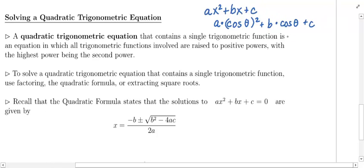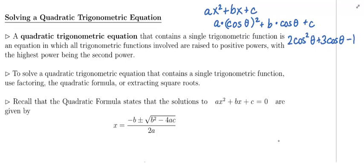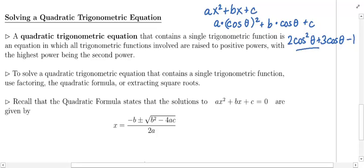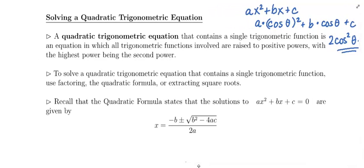It's going to look something like this: say a is 2, so 2cos²θ + 3cosθ − 1. We have the same trigonometric function throughout — only cosine of theta. Here cosine of theta is raised to the second power, and here it's raised to the first power. The highest power is the second power, fitting the mold ax² + bx + c, where x is the same thing as cosine of theta. That's how you recognize a quadratic trigonometric equation.